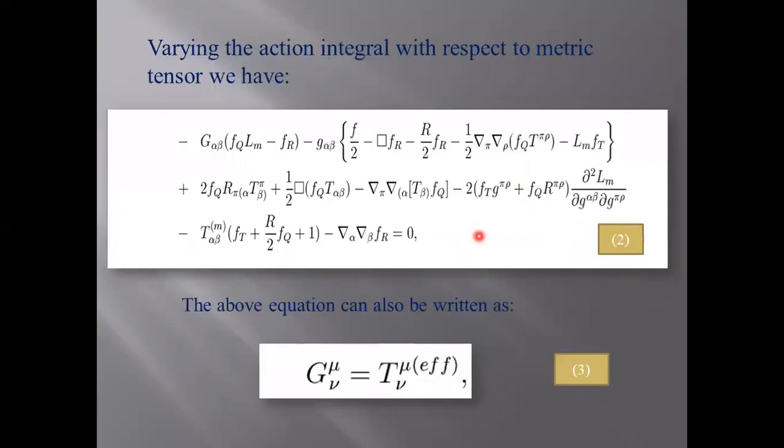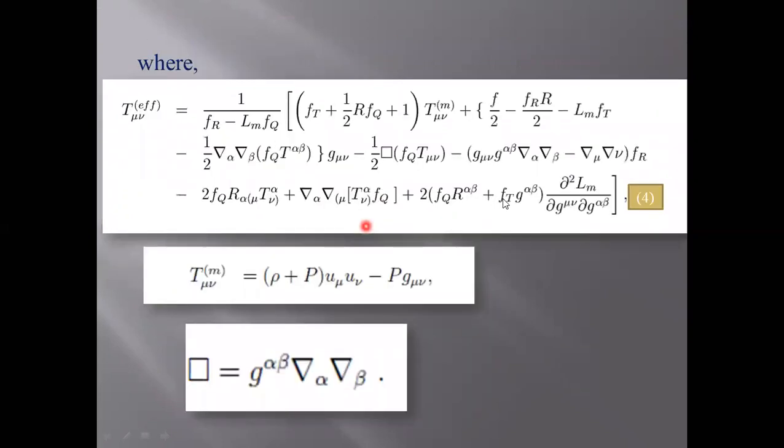Varying the action integral with respect to the metric tensor, we have equation number two. The alternative form of equation number two is written in equation number three, where T^μν_effective is written in equation number four. T^μν_matter here indicates the perfect fluid having isotropic pressure and box is the d'Alembertian operator defined here.